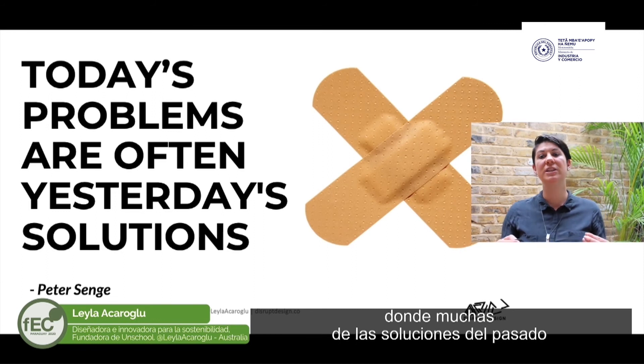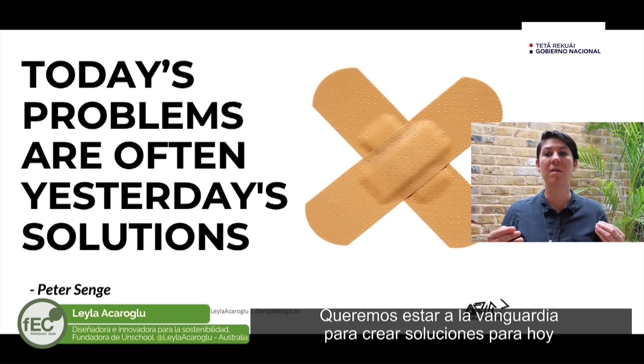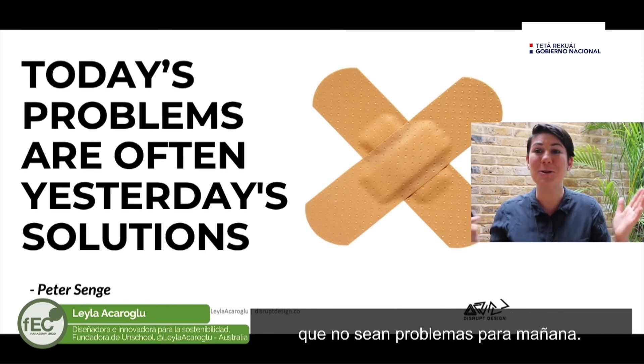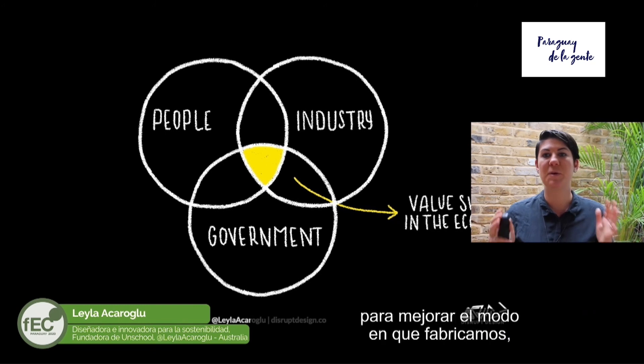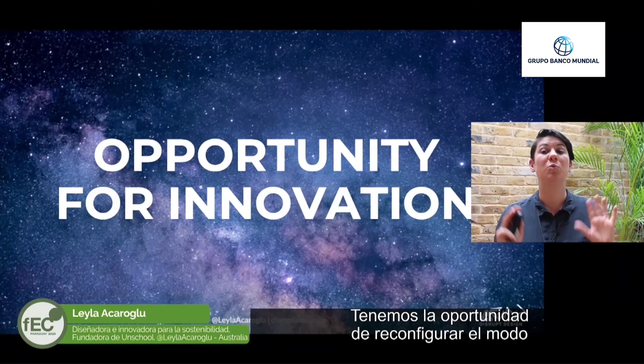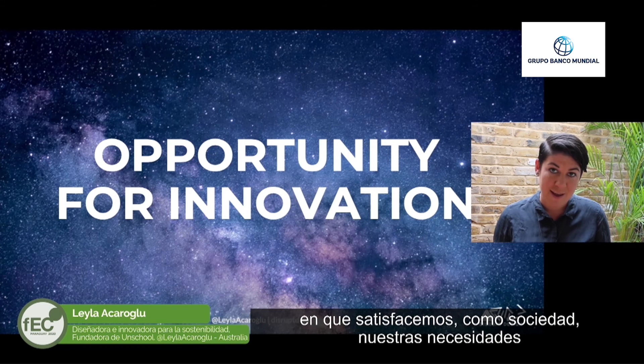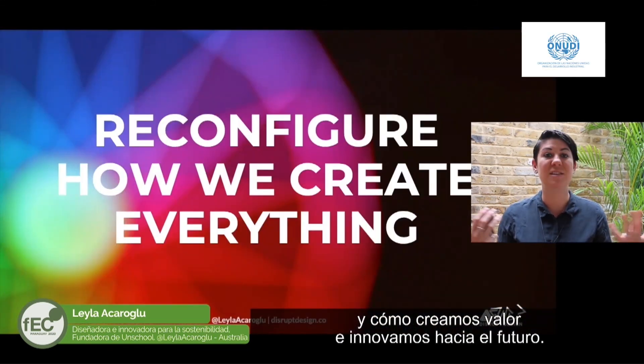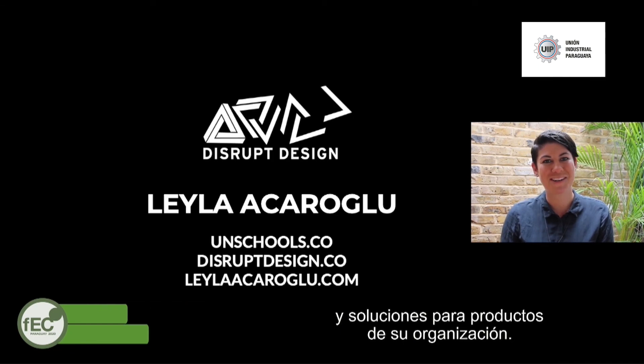We are in a situation where a lot of the solutions of the past have created today's problems, and we want to be at the forefront of creating solutions today that don't become tomorrow's problems. That does require collaboration — it requires consumers, industry, and government all working and challenging ourselves to be constantly improving the way we do things: closing the loop, figuring out how to revalue materials, finding better relationships with our customers, encouraging customers to repair, reuse, and recycle. The opportunity here is to reconfigure the way we as a society have our needs met, how we create value, and ultimately how we innovate into the future. Thank you so much for your time — I look forward to hearing about how you have created more sustainable and circular business and product solutions.